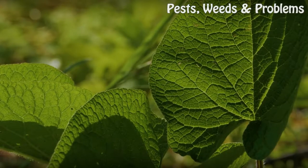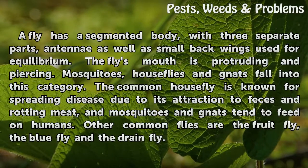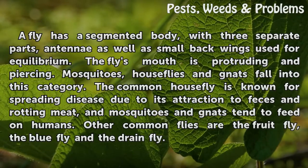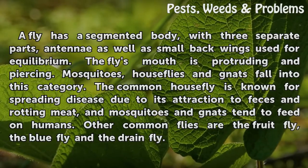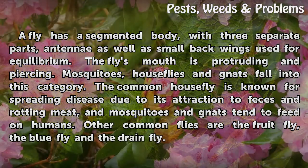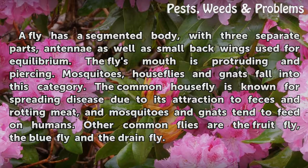Flies. A fly has a segmented body with three separate parts, antennae, as well as small back wings used for equilibrium. The fly's mouth is protruding and piercing. Mosquitoes, houseflies, and gnats fall into this category. The common housefly is known for spreading disease due to its attraction to feces and rotting meat, and mosquitoes and gnats tend to feed on humans. Other common flies are the fruit fly, the blue fly, and the drain fly.